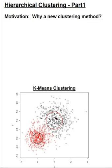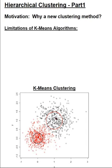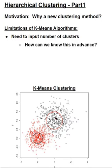First, let's start off with a motivation on why we need a new clustering method considering we already have seen k-means clustering. Check out my k-means video if you haven't seen it. The first limitation of k-means is we need to input the number of clusters for the algorithm to start. If you haven't seen the data set before, how can this be known in advance? And if the number of clusters need to be changed, then we have to rerun the entire clustering algorithm, and this can be time-consuming if you have a large data set.